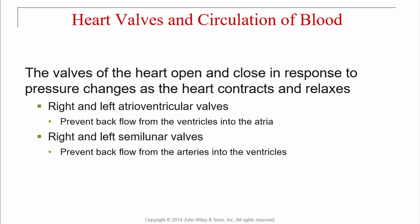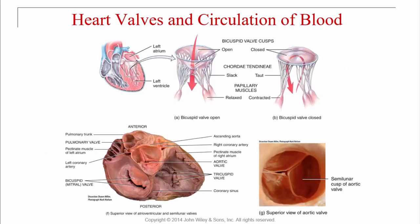The valves of the heart open and close in response to pressure changes as the heart contracts and relaxes. The right and left atrioventricular valves — the tricuspid and bicuspid (mitral) valves — prevent backflow from the ventricles into the atria. The right and left semilunar valves — the pulmonary and aortic valves — prevent backflow from the arteries back into the ventricles.